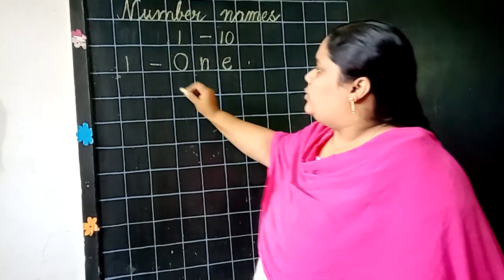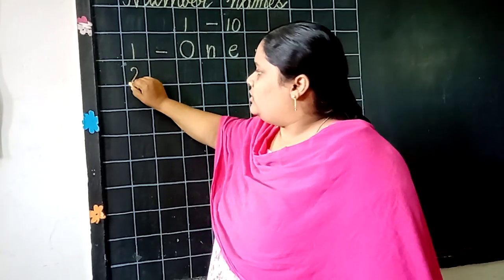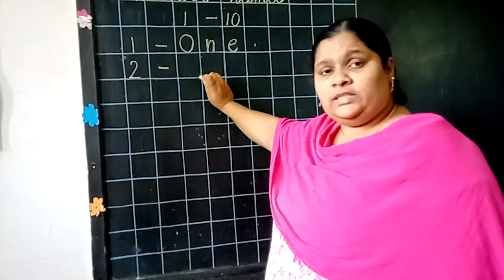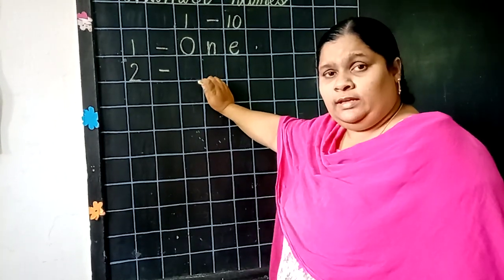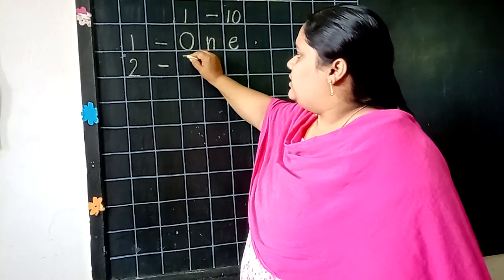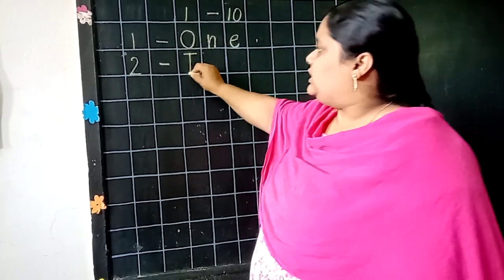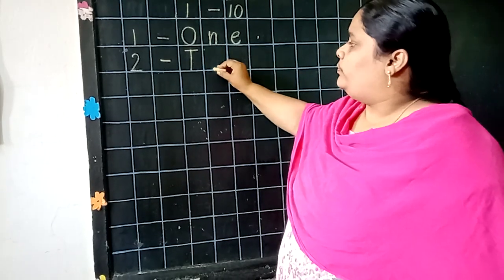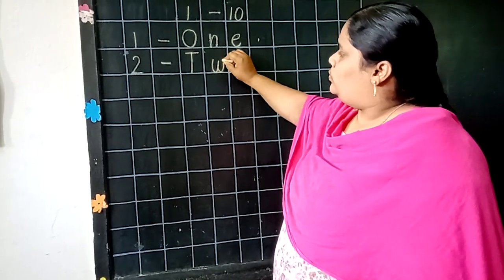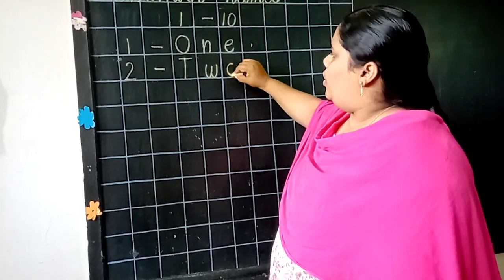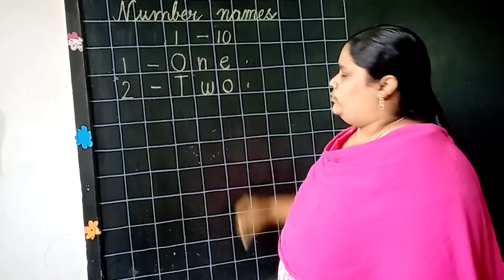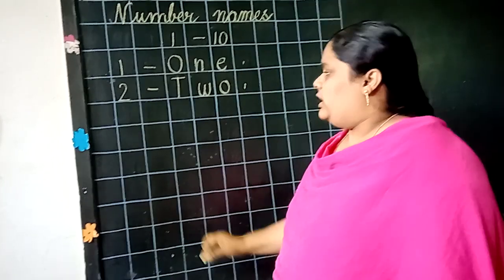Now, 1 after 2. Can anyone say the spelling of 2? Yes, good. See here. Repeat after me. T. O. Ok. Next.